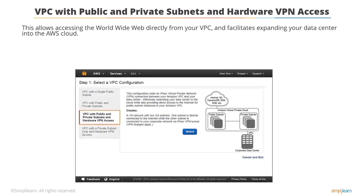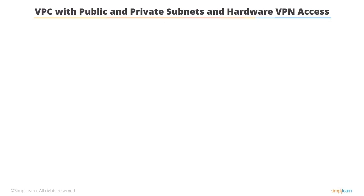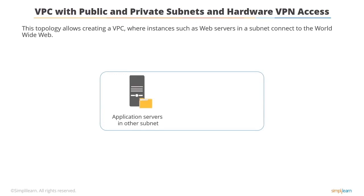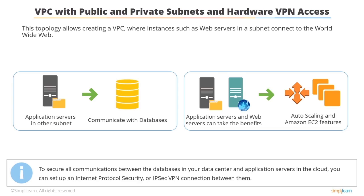VPC with public and private subnets and hardware VPN access allows accessing the world wide web directly from your VPC and facilitates expanding your data center into the AWS cloud. You can consider this option for hosting scalable web applications connected to your data center. Web servers in one subnet connect to the internet, while application servers in another subnet communicate with your business network databases. Application servers and web servers can leverage auto scaling and Amazon EC2 features. To secure all communications between the databases in your data center and application servers in the cloud, you can set up an IPsec VPN connection between them.